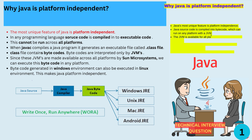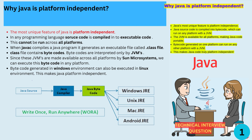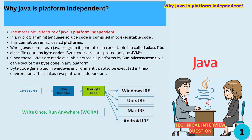When Java's compiler, Javac, compiles a Java program, it generates an executable file called a class file. A class file contains bytecode. Bytecode is interpreted only by the Java Virtual Machine, or JVM. Since Sun Microsystems makes JVMs available for all platforms, we can execute bytecode on any platform.